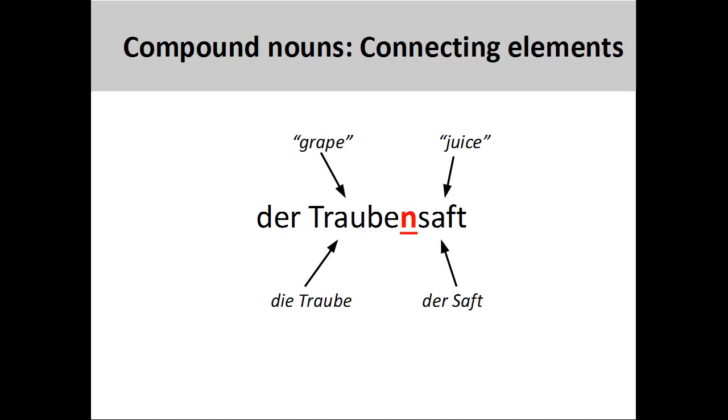Here the noun die Traube, grape, is joined to the noun der Saft, juice, by the plural ending n, to create the compound noun der Traubensaft, grape juice.